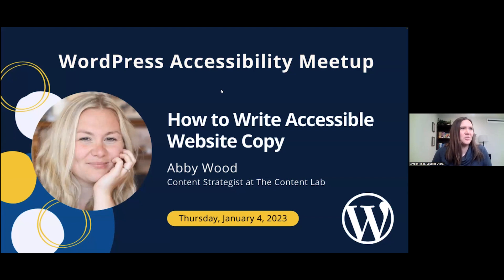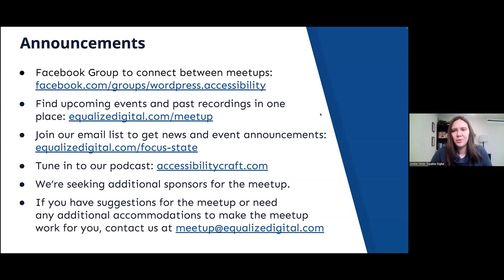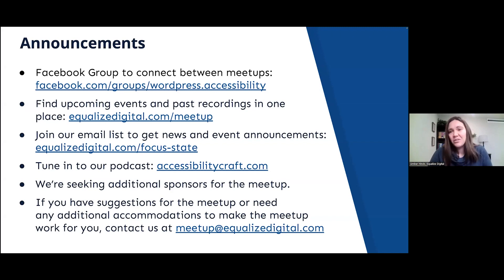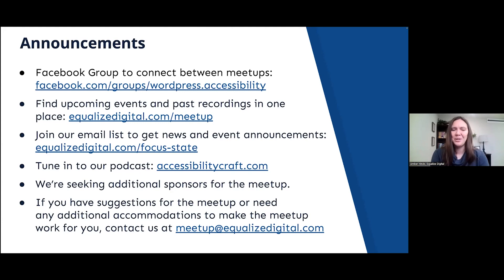I have a few announcements to kick off. We have a Facebook group — you can find it by searching WordPress Accessibility on Facebook, or go to facebook.com/groups/WordPress.accessibility. It's a great way to connect with people in between meetups, get answers to questions, share things you're working on, get feedback, and help other people. It's a great group that's been growing pretty quickly and we'd welcome all of you to join it.